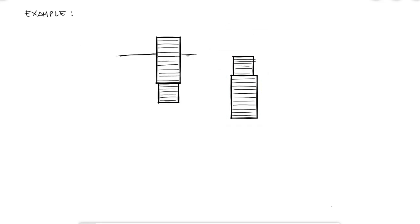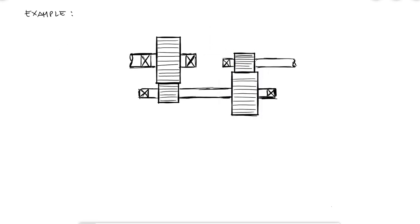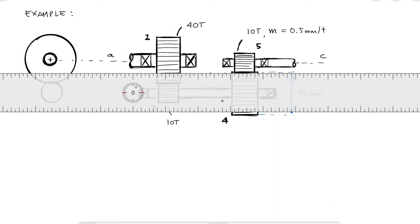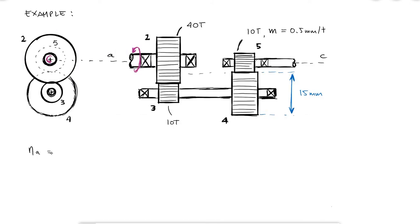In a four-gear system that transmits power from shaft A to shaft C without any losses, gear 2 has 40 teeth, gears 3 and 5 are the same gear with 10 teeth and a module of 0.5 millimeters per tooth, and gear 4 has a pitch diameter of 15 millimeters. If shaft A is rotating at 200 revs per minute, what is the input and output torque and the output revs per minute if the power going in is 50 kilowatts?